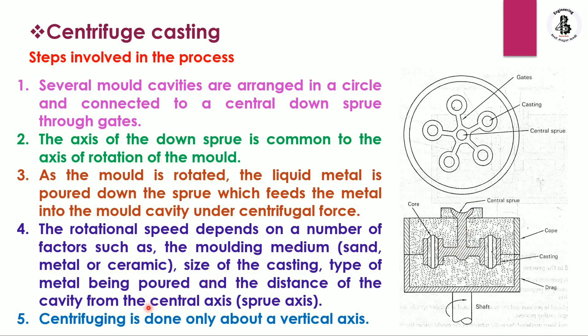Centrifuging is done only about a vertical axis; there is no possibility with a horizontal axis. Semi-centrifugal and centrifuging casting processes always follow a vertical axis. But if you work with a true centrifugal casting process, there is a possibility of using a horizontal axis.